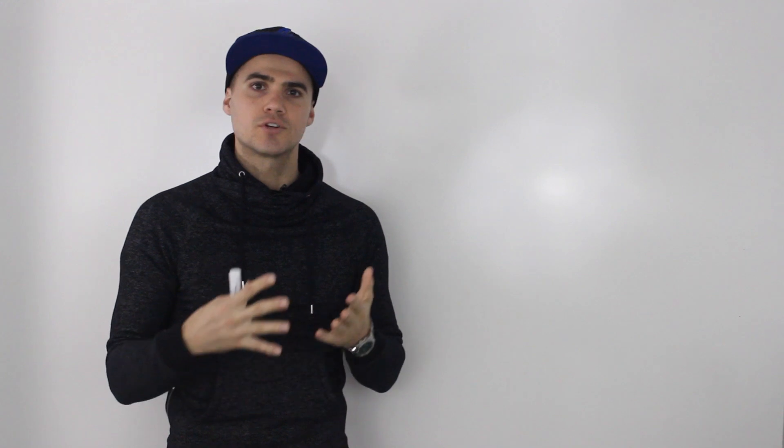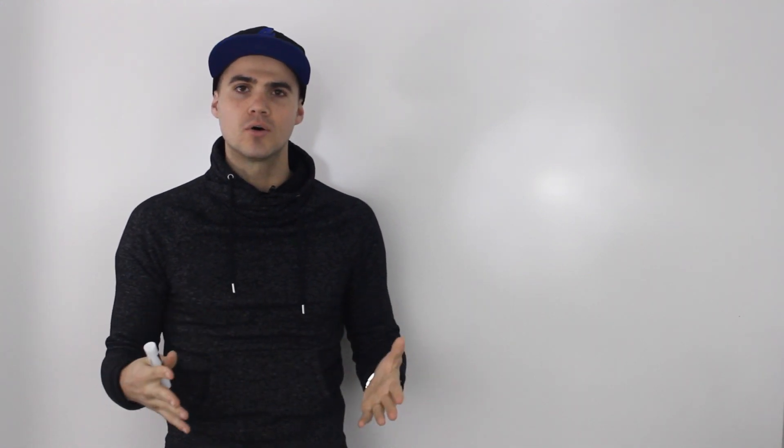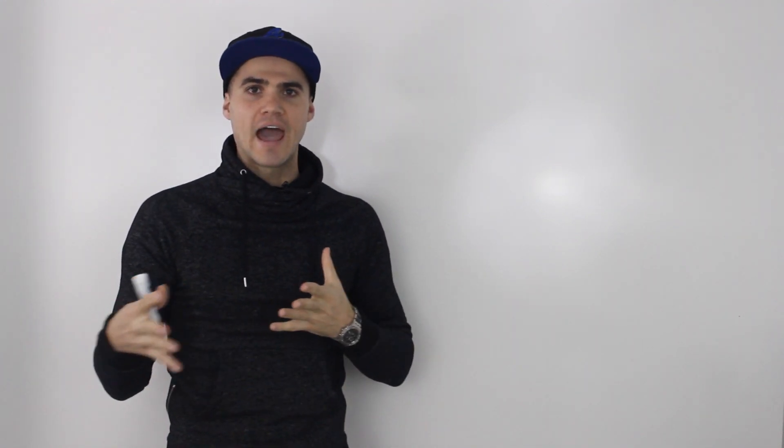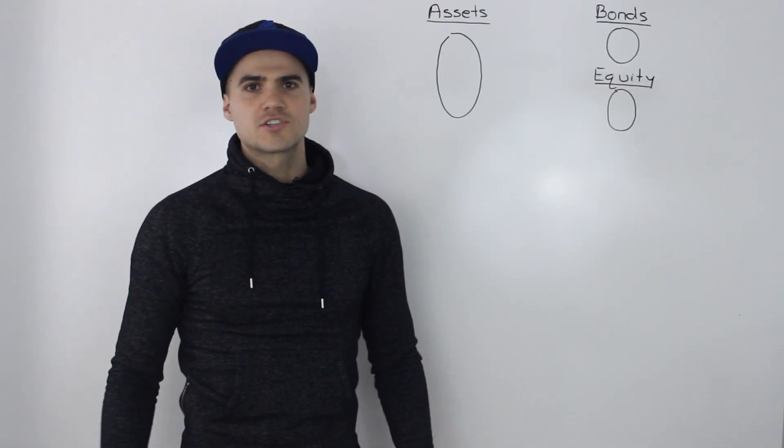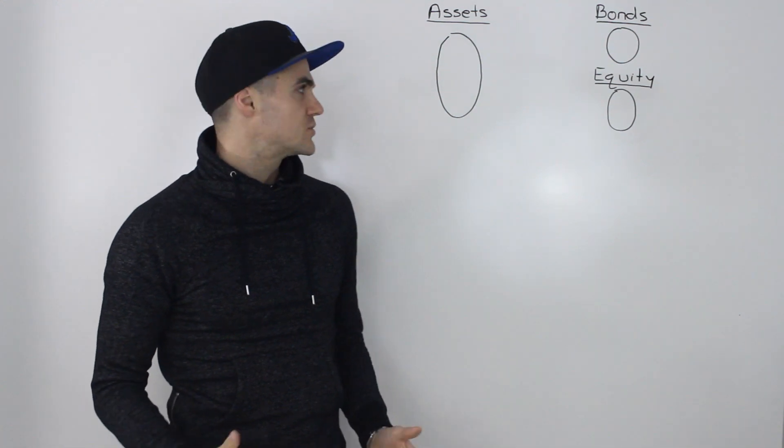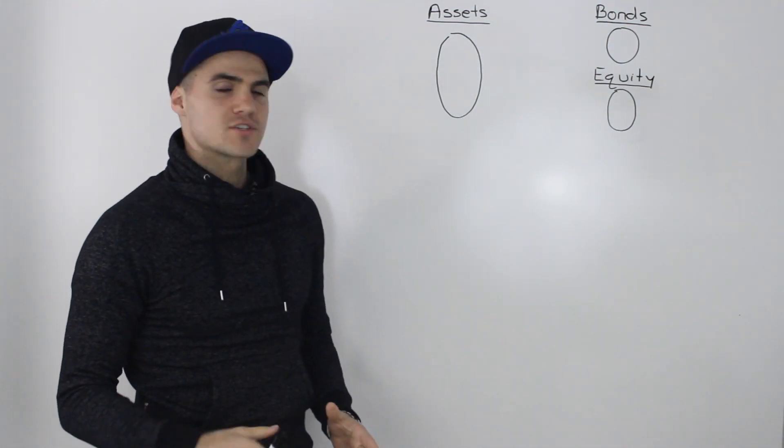What's up everybody? In this video we're going to learn about three things: cash flow from assets, cash flow to shareholders, and cash flow to bondholders, and how they relate to one another. And to start the video off let's do a little review.